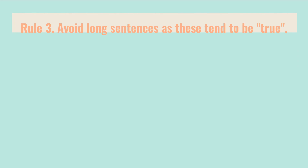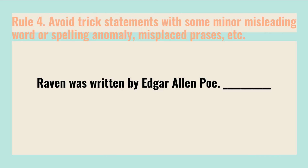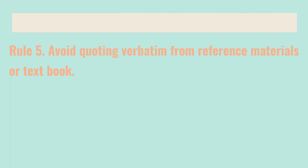Rule number three: avoid long sentences, as these tend to be true. Keep sentences short. Rule number four: avoid trick statements with minor misleading words or spelling anomalies, misplaced phrases, etc. A wise student who does not know the subject matter may detect this strategy and get the answer correctly. Example: 'Raven was written by Edgar Allen Poe.' Here, 'Allen' is misleading — the correct name is 'Allan' — so the answer is false. Rule number five: avoid quoting verbatim from reference materials or textbooks, as this sends the wrong signal that memorization is necessary and higher-level thinking skills are not given due importance.